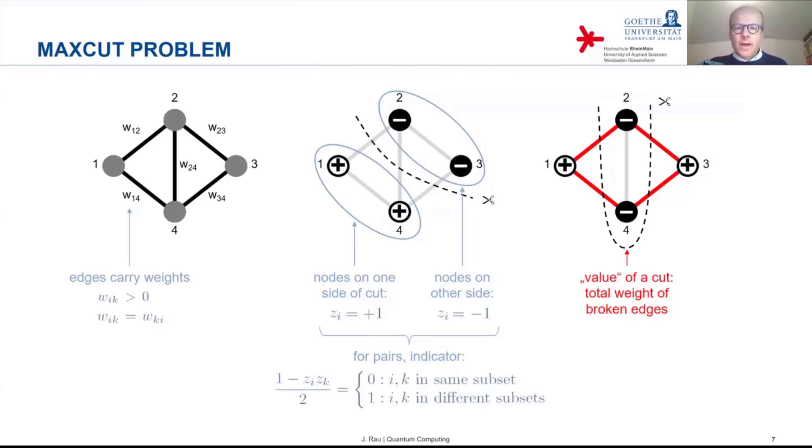Each of these edges has a certain weight, carries a certain weight. And if we add up all the weights of the broken edges, then we get the value of the cut. And the goal is to maximize this value. So given a graph, given an arbitrary assignment of weights to the edges, we want to find that cut which maximizes the value.